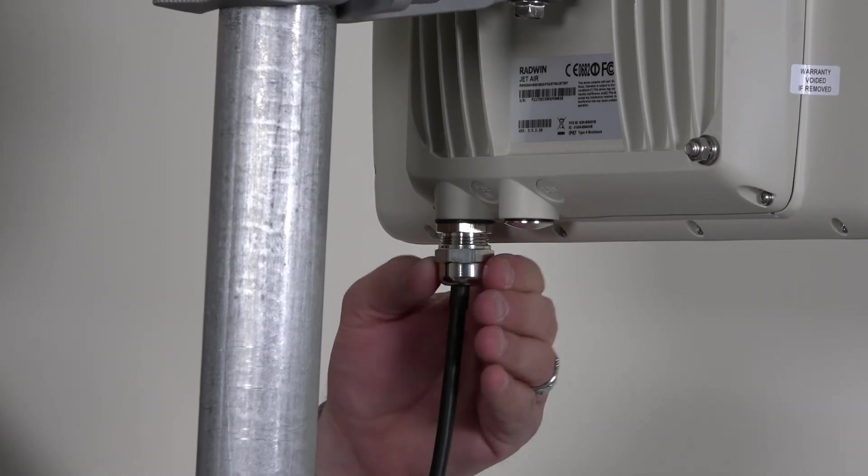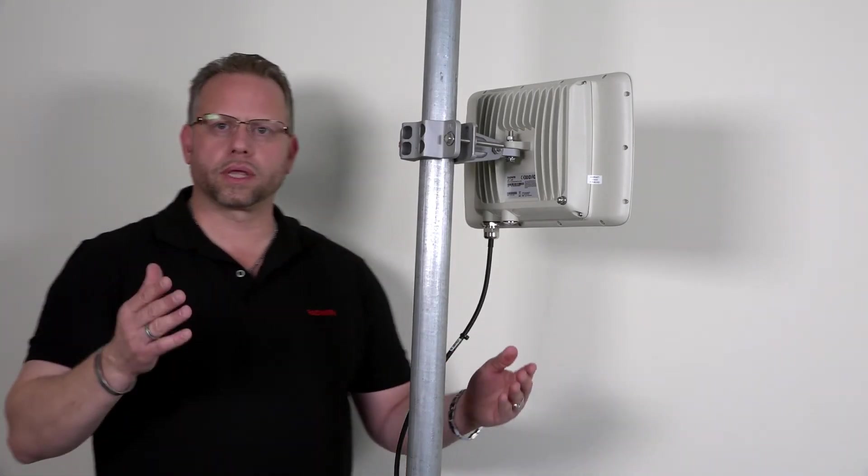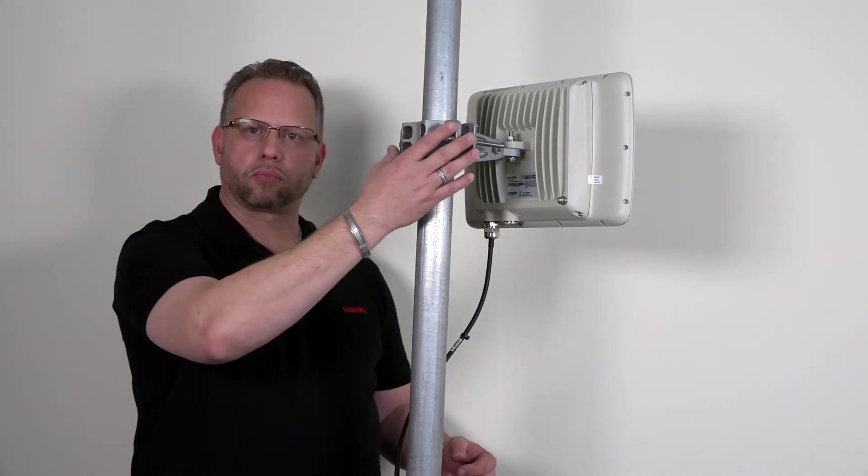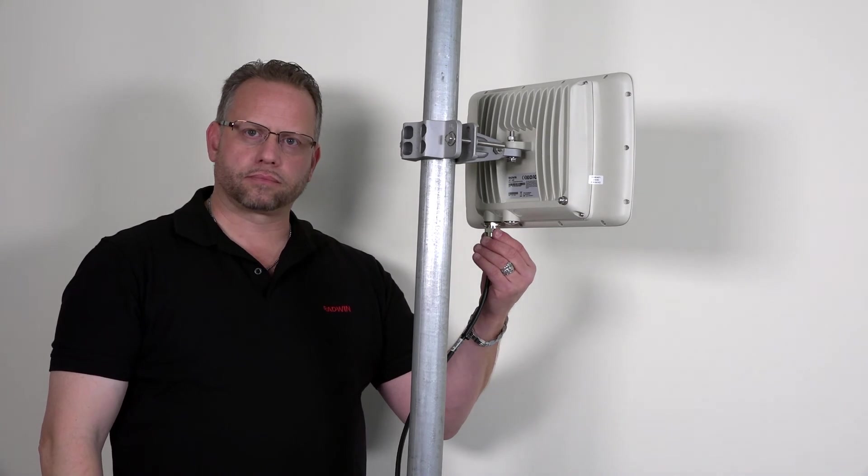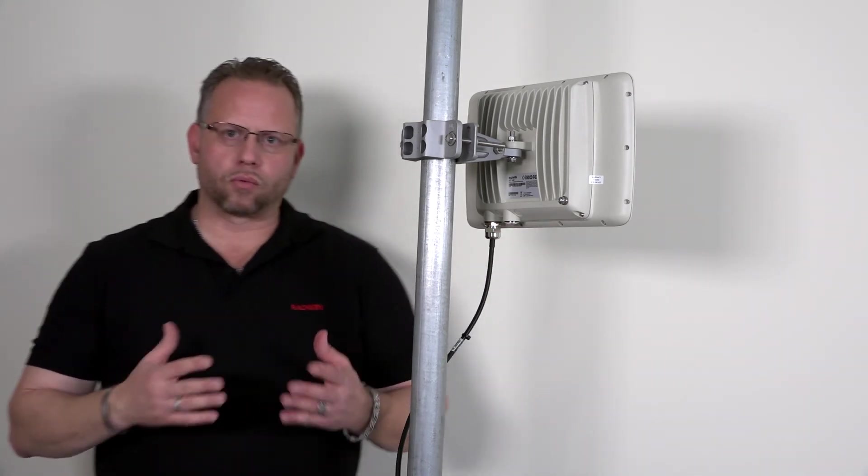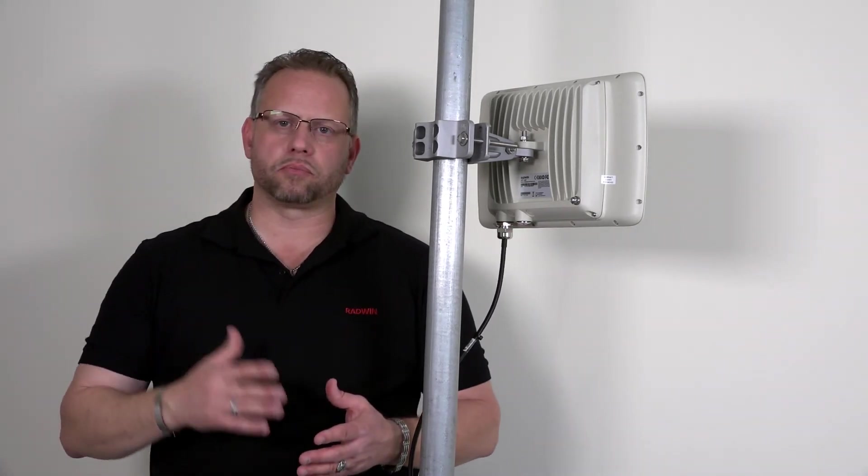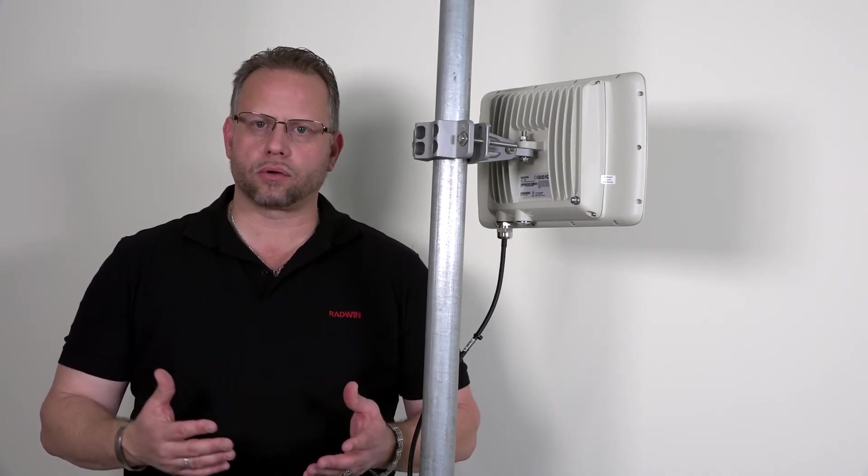Installation is simple and with only a little bit of time you can see that we put together the bracket kit and the cable assembly. Afterwards when you run your cable down into the building or into your telco closet you'll connect the Radwin power over ethernet injector.